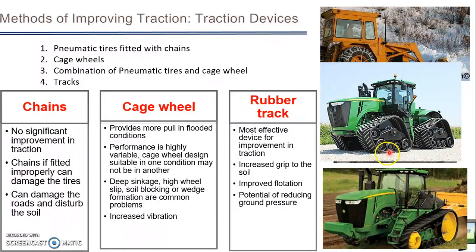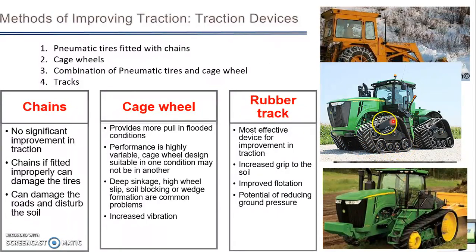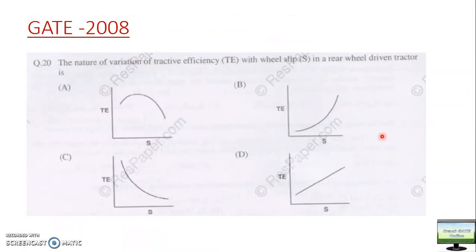Track is the most effective device because you will have the highest tire footprint area - more footprint means more traction. Track will also reduce ground pressure because the footprint area is very high. Track is the best way to improve traction, but track tractors require a very high amount of engine power, so in low HP tractors you cannot use tracks - only for higher HP tractors.